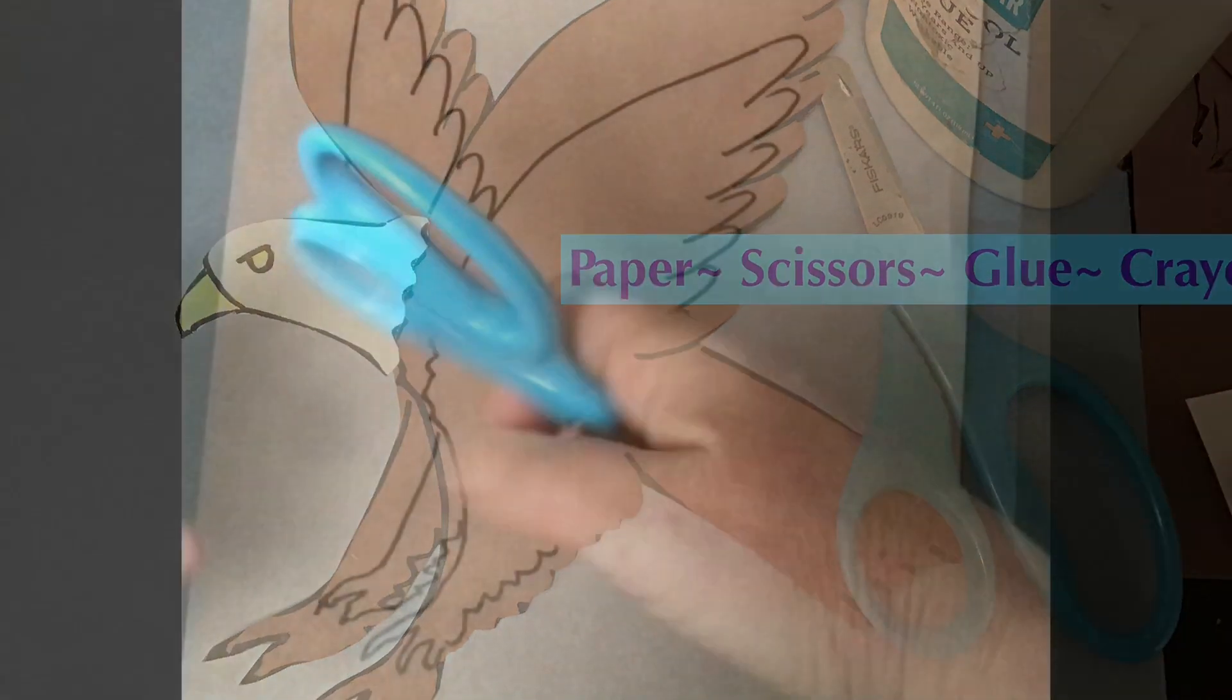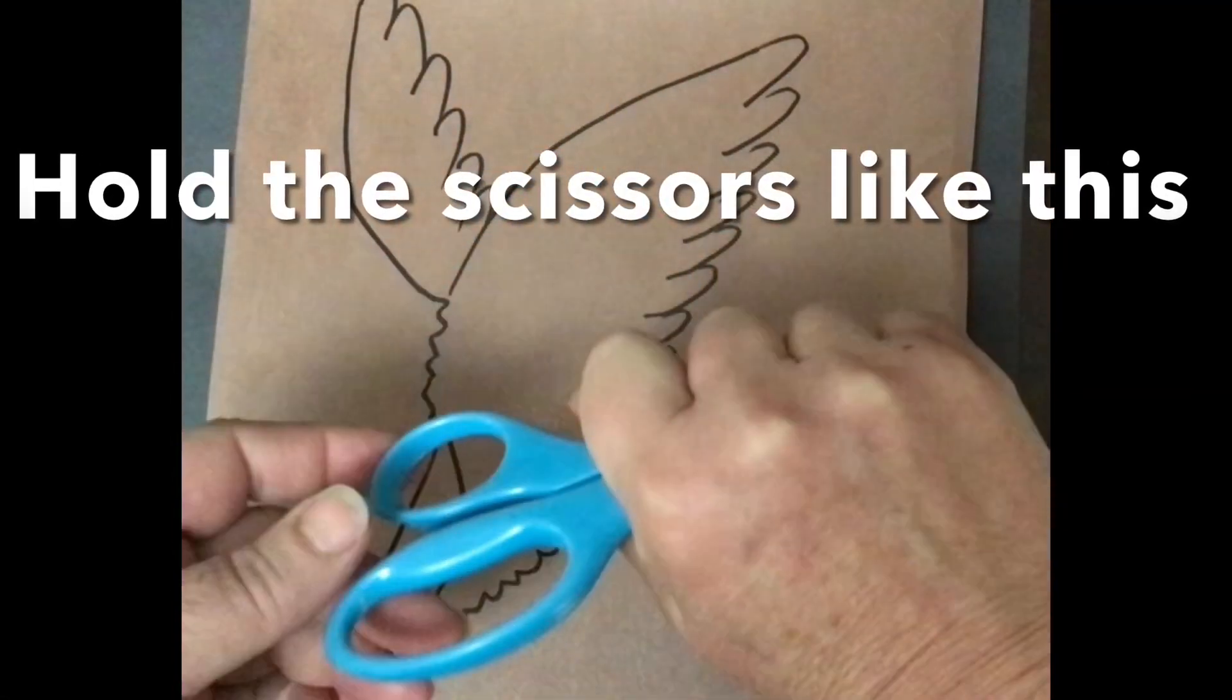When you use pieces of paper and glue it down, it's called a collage. Hold the scissors like this when you walk around.